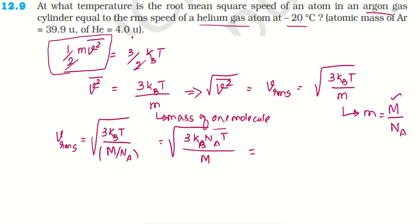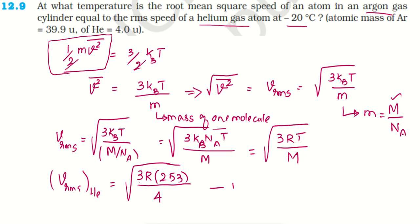Let us write VRMS for helium gas first. This is square root of 3R times 253 divided by 4. Minus 20 degrees Celsius converted to Kelvin becomes 253, and helium mass is 4. Keep this as equation 1.